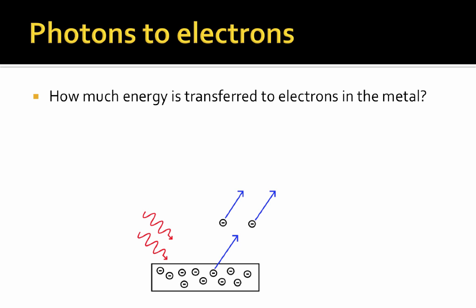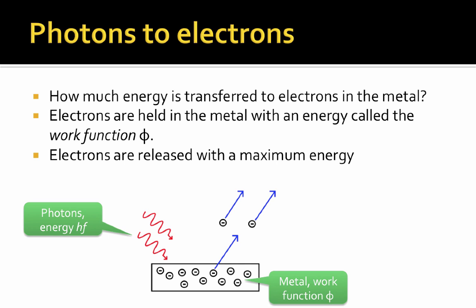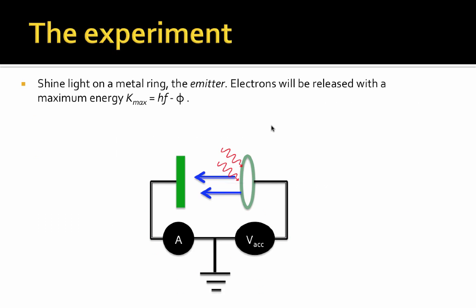Alright, so let's think about going from photons to electrons. We want to know how much energy is transferred to electrons in the metal as they leave the metal. So we start with photons with energy hf. And the electrons, which are pictured here as shown inside the metal, are held in with an energy that we call the work function. The work function is an energy, represented as phi. And so we say the metal has a work function phi. That's how much energy it takes to release an electron. So the maximum energy an electron can have when it leaves the metal will be equal to the energy of the photons minus the work function. So here we have two electrons that are released by two photons coming into the metal. Two photons strike the metal, the electrons are released with a maximum energy hf minus phi.